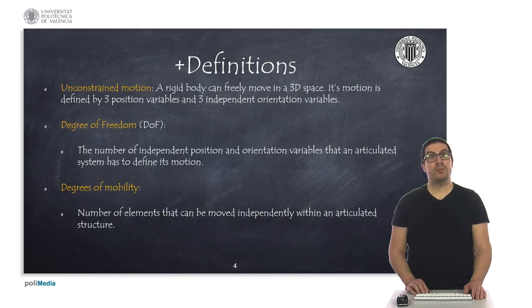So, the unconstrained motion refers to a rigid body that freely moves in a 3D space. This motion is defined by three position variables and three independent orientation variables.